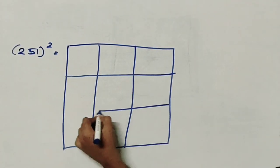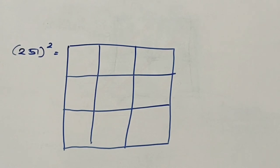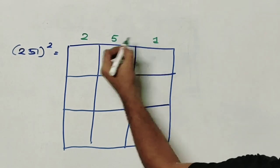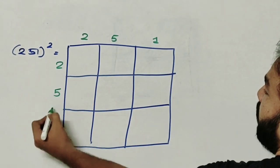So this becomes a block of 9 small squares. So 251 has 3 digits. 2, 5, 1.